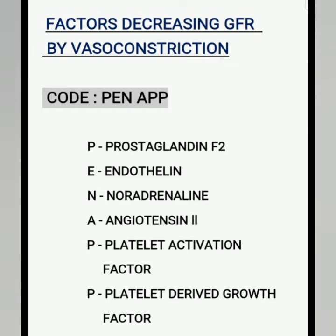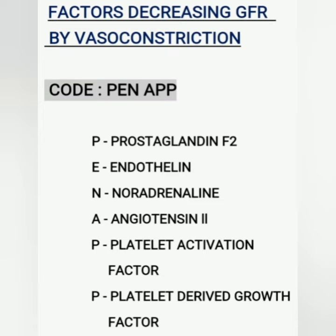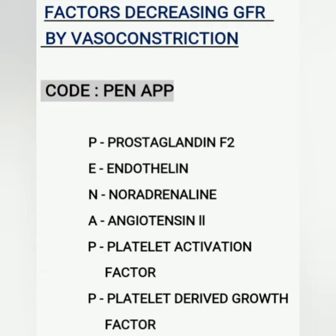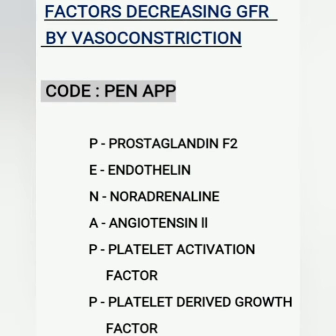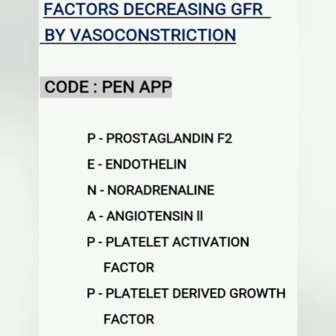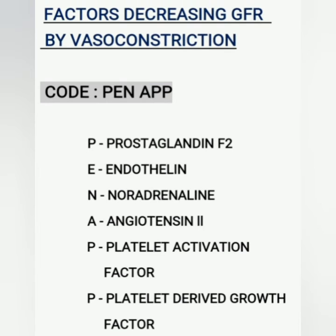Factors decreasing GFR by vasoconstriction — mnemonic: PENAP. P: Prostaglandin F2. E: Endothelin. N: Noradrenaline. A: Angiotensin II. P: Platelet activation factor. P: Platelet-derived growth factors.